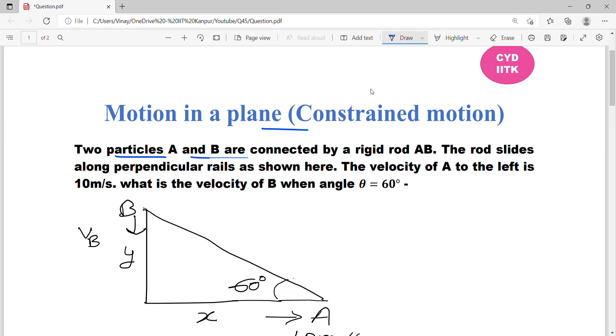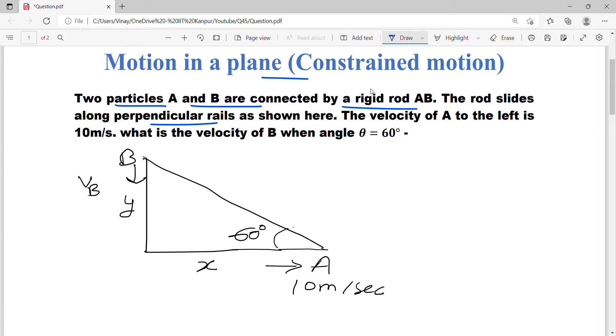Two particles A and B are connected by rigid rod AB. The rod slides along perpendicular rails, so which one is rod AB? This is the rod AB. And two particles A and B, so in a way A and B are the end points of the rigid rod. This is the rod and the two ends are the end points of the rigid rod. The rod slides along perpendicular rails as shown here.